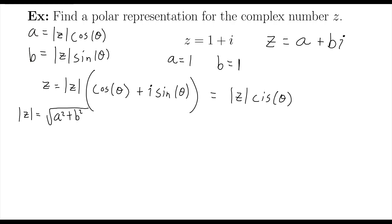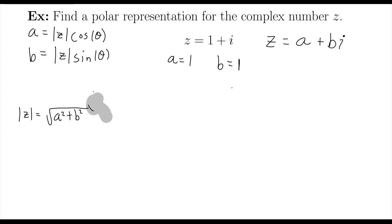So let's start off by finding the magnitude of z. I'm going to go ahead and get this out the way just to clear up some space. So the magnitude of z equals the square root of a squared plus b squared. That's 1 squared plus 1 squared. That's going to come out to be the square root of 2. So the magnitude of z is the square root of 2.